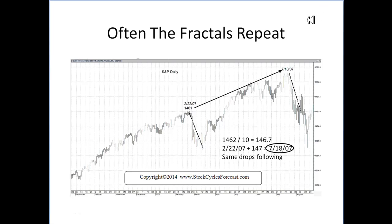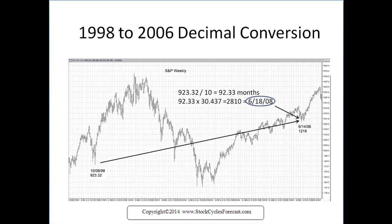Often we find that these fractal cycles repeat very similarly. A top in February of 2007 that resulted in a 500-point drop, and the numbers were 1461. If we take 10% of that and get 146, 147 days later, we will get the next top, and we will get another 500-point drop, just like the first one.